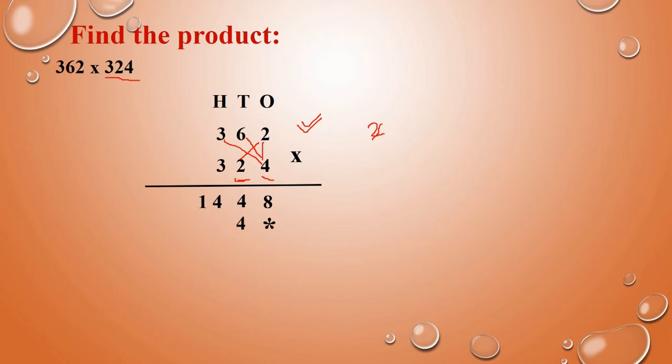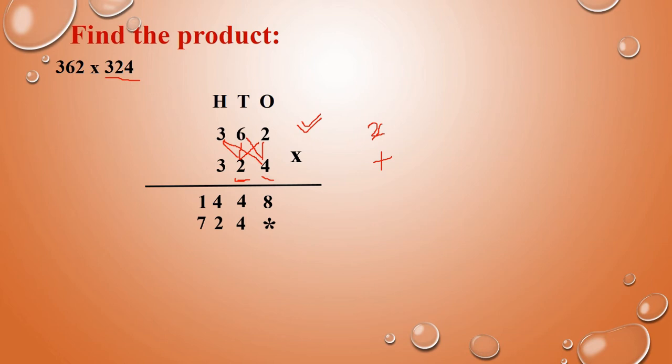2 into 2: that is 4. Next, 2 into 6: 2 sixes are 12. So 12 means write 2, then remaining carry 1. Next, this 2 you have to multiply with 3. So 2 threes are 6. 6 plus this carry 1 is 7. So we get 724.